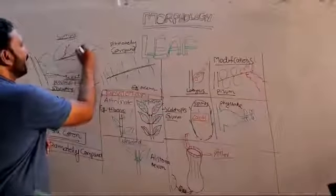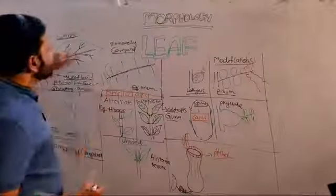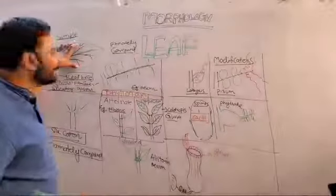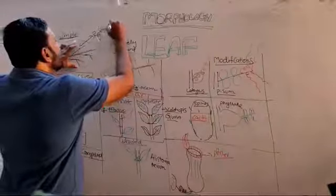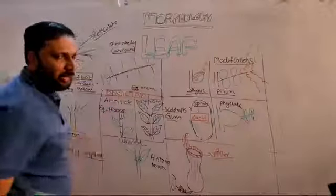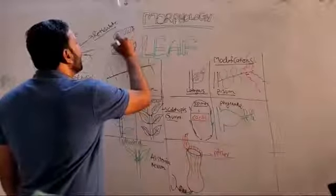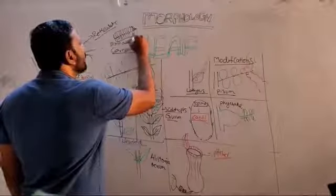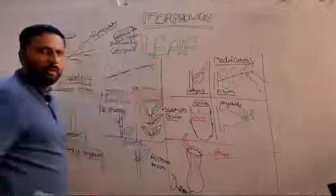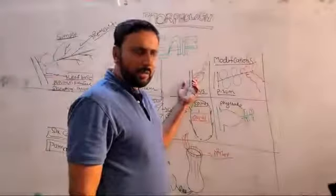Venation — mode of arrangement of veins in the lamina is called venation. In reticulate venation, the mid vein divides into lateral veins and veinlets forming a network — present in dicots. In parallel venation, lateral veins are arranged parallelly — present in monocots, example Musa paradisiaca (banana).